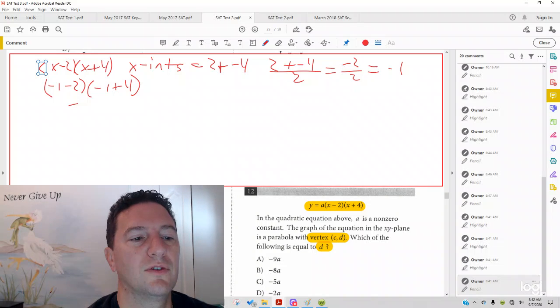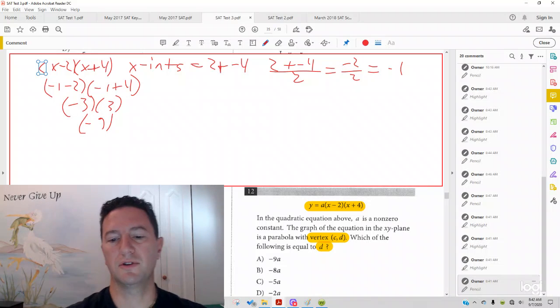And remember, you do the parentheses first here, you get negative 3 times positive 3, and you get negative 9 is the y part of the vertex. Now, here when it says the vertex is cd, and it's looking for d.